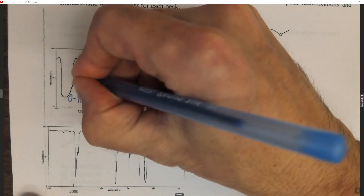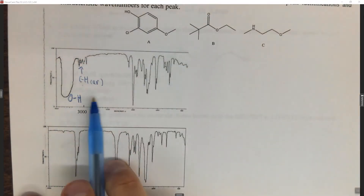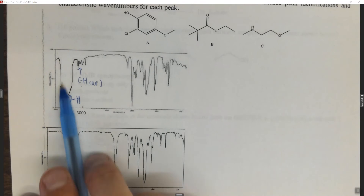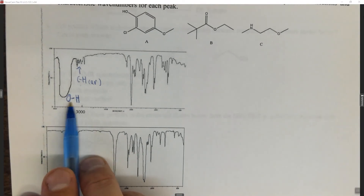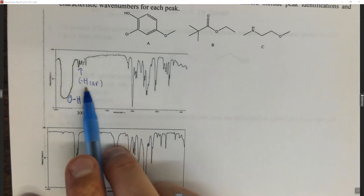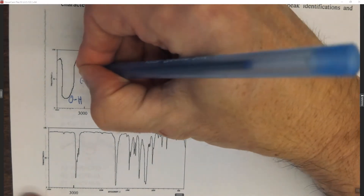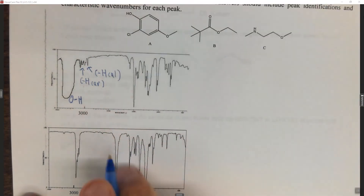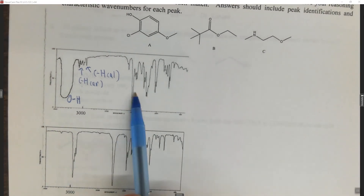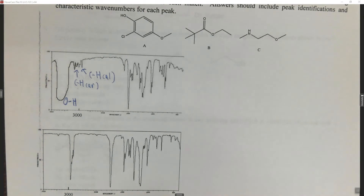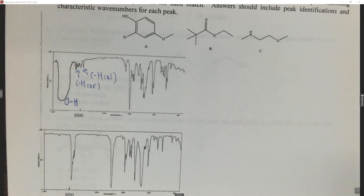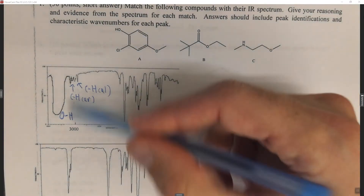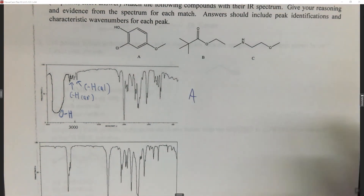Here is going to be a CH aromatic, slightly above 3000 cm⁻¹. Note I'm just labeling the peaks — you should write down the characteristic values. We also have a CH aliphatic, meaning a non-aromatic CH, and looking down we have no C=O, but a C=C. Since the only compound with an aromatic ring is choice letter A — the only one with peaks above 3000 — this has to be choice letter A.